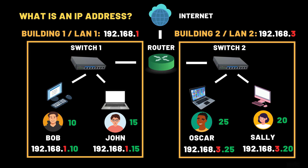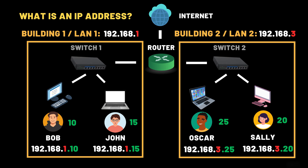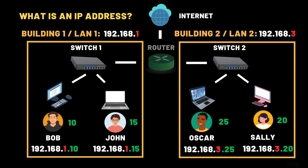How do messages move around? Inside the building, we have the switch. It works like the mail room of the building, sorting and delivering letters internally between apartments. It doesn't send anything outside — just makes sure the mail reaches the correct room inside the same building. Then we have the router, which is like the local post office. It connects multiple buildings together, or even entire neighborhoods, and ensures mail gets from one building to another, across the city, or even to a different country.